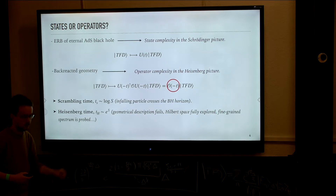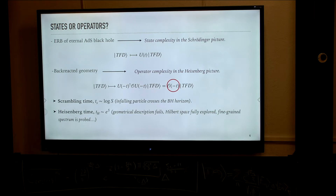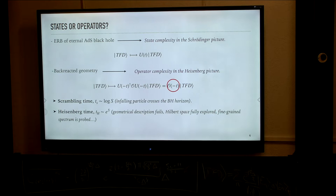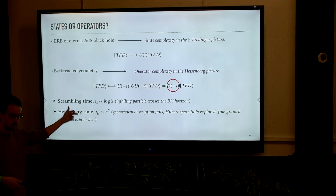We are going to be able to probe the scrambling time, which is logarithmic in the system size, and eventually we should also be able to probe the Heisenberg time — exponential in system size. This is the time at which all the directions of the Hilbert space of the black hole have been exhausted and then the microstate starts to explore linear recombinations of things that have already been explored. So complexity should saturate at these timescales.